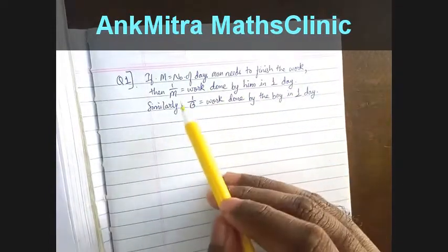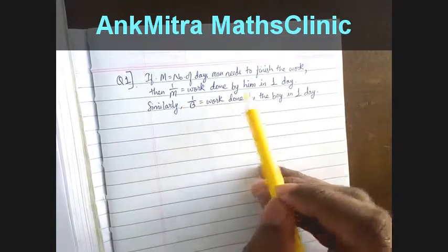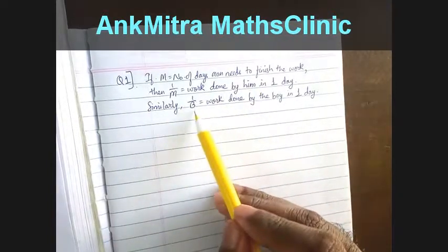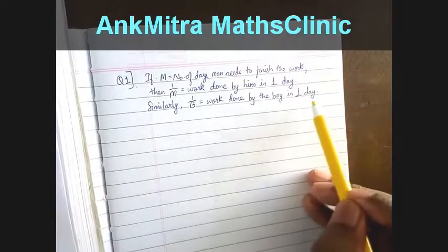Similarly, if b is the number of days a boy takes to finish the work, then 1 upon b will be the work done by the boy in one day.